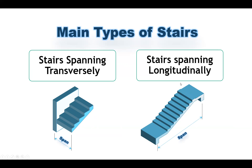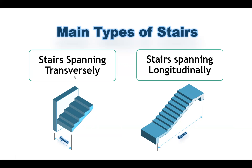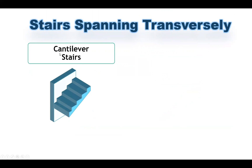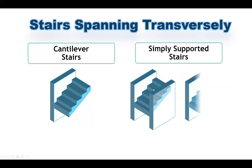Let's learn about each type of these main categories, starting with the first one — spanning in the transverse direction. In this case we have cantilever stairs, where the stair is supported only from one side to a reinforced concrete wall, giving a fixed support. In the other case, you may have a simply supported stair in the transverse direction, supported on two walls, or a wall and a stringer beam, or two beams. In all of these cases, the stairs are supported in the transverse direction.